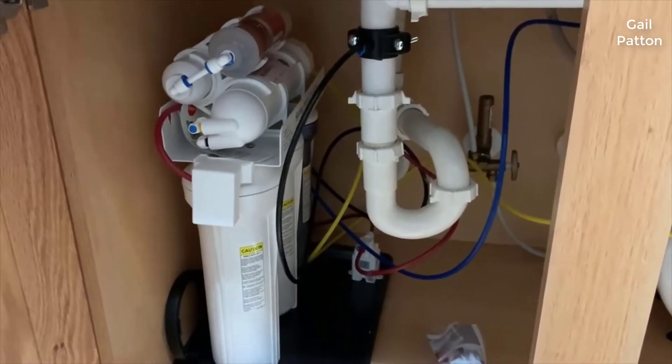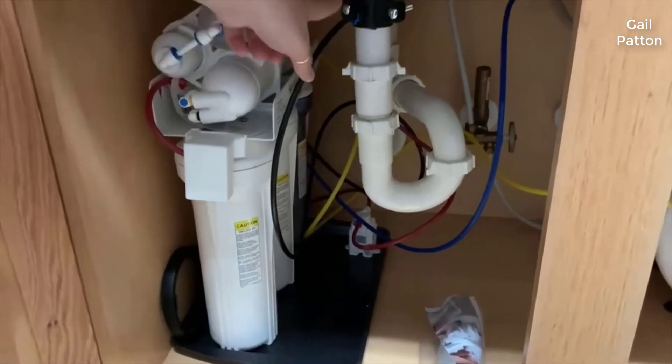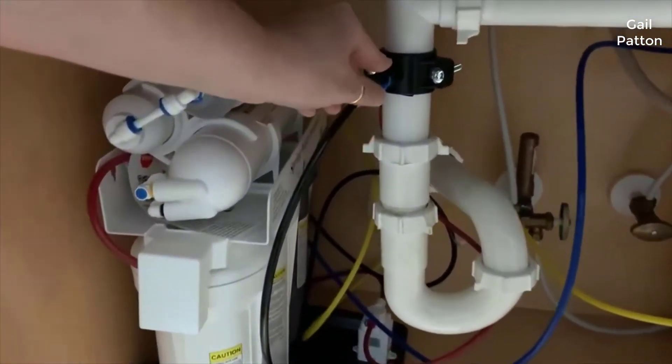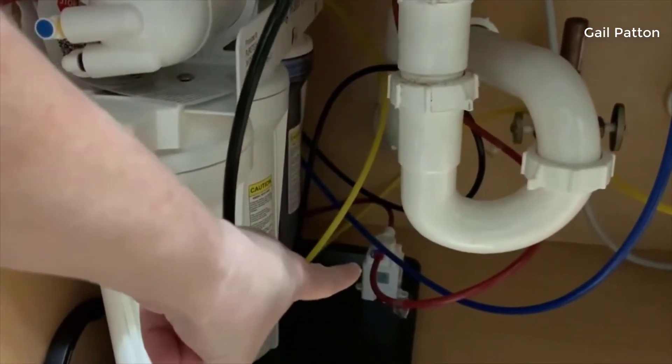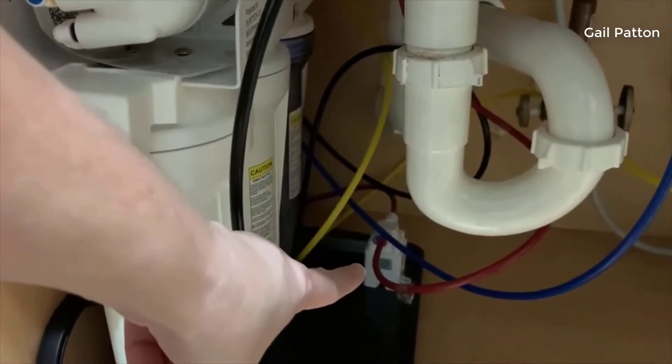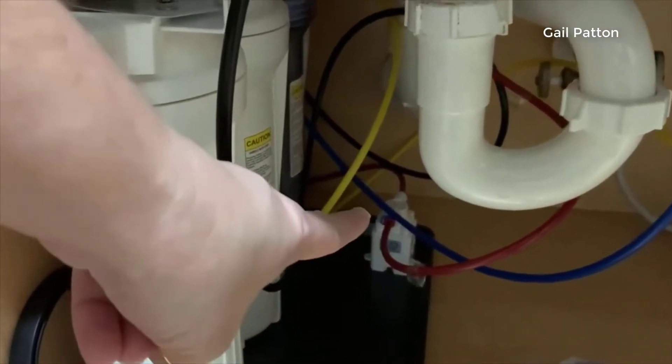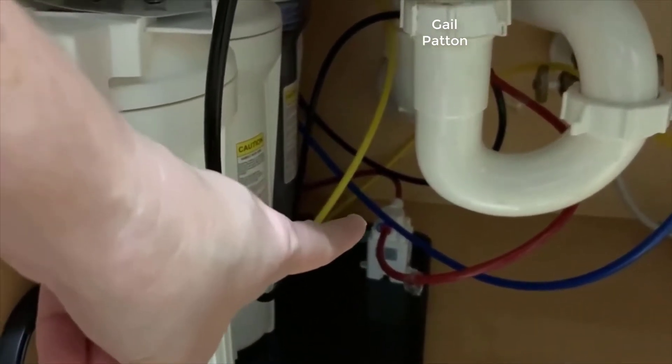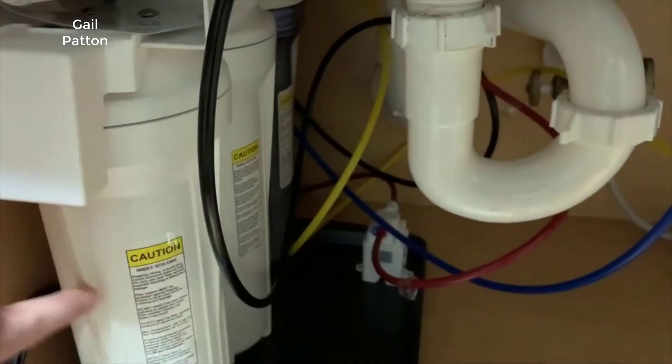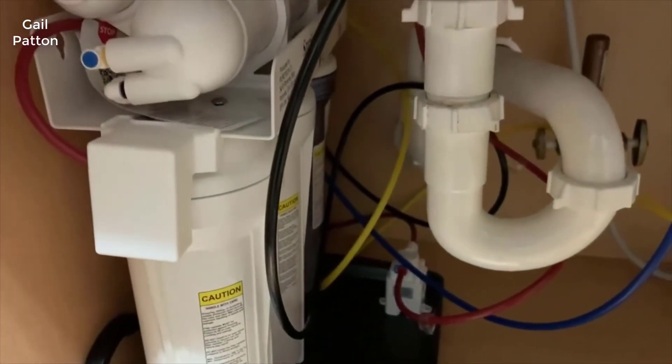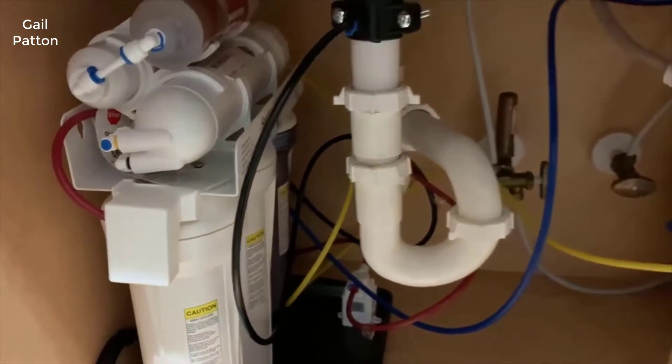If you look here, this is the drain for the water, and then down here is the shut-off valve. So if there is a leak or any water on the floor, that will shut off the water supply to the iSpring system.